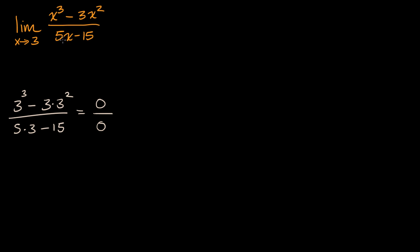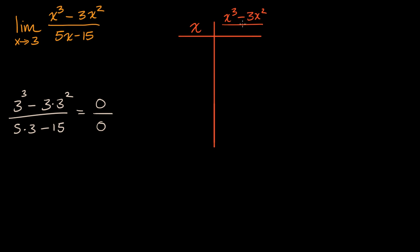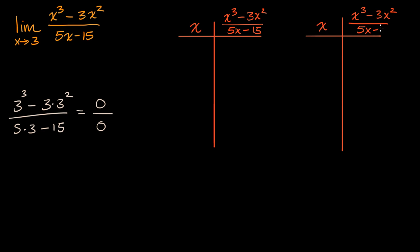But even though the expression is not defined, let's see if we can get a sense of what the limit might be. To do that, I'm going to set up two tables. This is x, and this is x to the third minus three x squared over five x minus 15 — and I'll do that again for the second table.